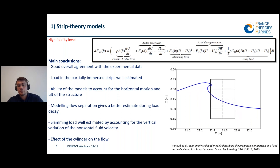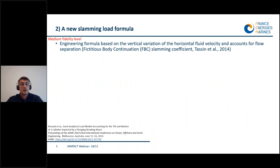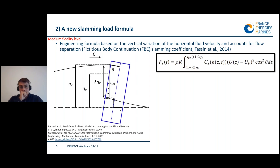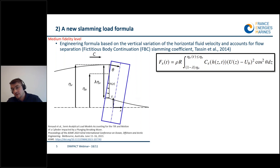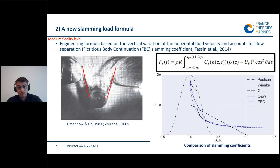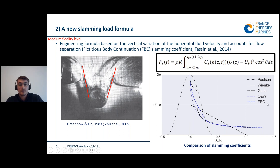Strip theory models are not very convenient to use because we need a detailed representation of the wave. We therefore developed a new slamming load formula that accounts only for a few global parameters. It is based on the vertical variation of the horizontal fluid velocity in the crest and also accounts for flow separation during the impact. The problem is simplified by considering only a vertical front that progressively penetrates the inclined structure. The slamming coefficient comes from the fictitious body continuation model — the Wagner model extended by adding fictitious sections to the cylinder — and the slamming coefficient predicted matches well the experiments from Campwell and Winder.